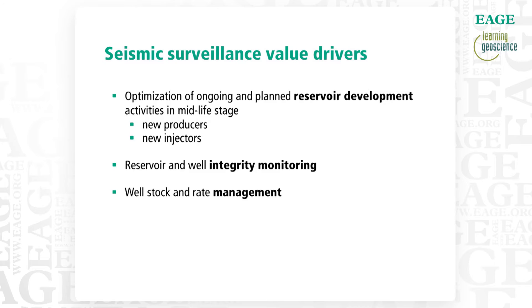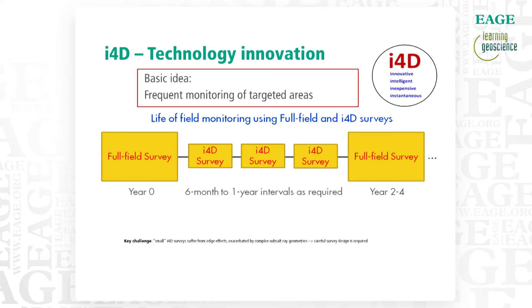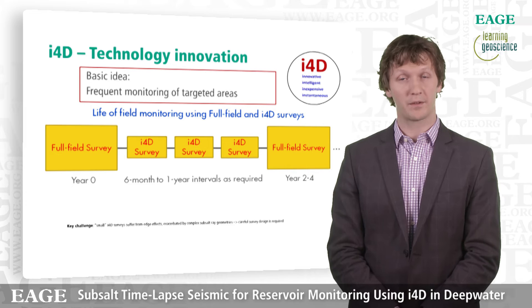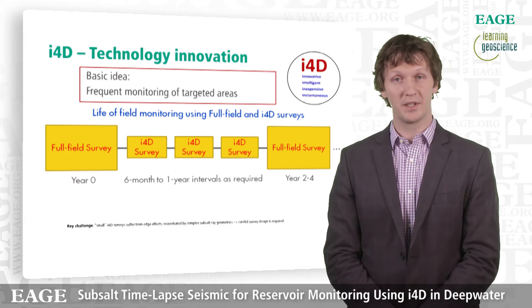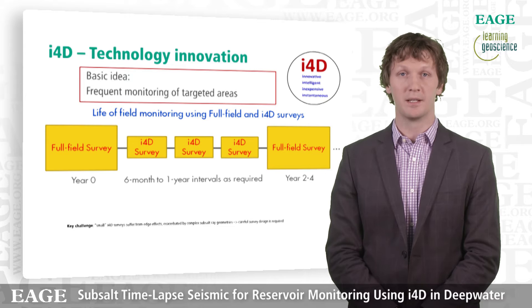This talk is really showcasing the success of the I4D technology, which is what we use to plan this monitor survey. With I4D, you're looking for the minimal survey design to properly monitor a field. You start with a full field survey — maybe a thousand nodes covering your entire field, all the flanks, seeing everything you need to see. But every six months to one year, when you need to monitor high-risk, high-yield wells and make sure injection is staying within zone and the water flood is going where you want, you do smaller, low-cost surveys.